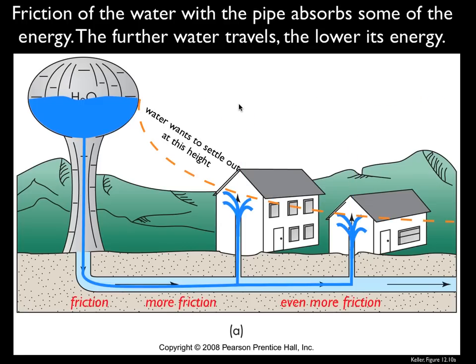In real life, it doesn't quite happen like that because our pipes actually have a fair amount of friction in them. That friction with the water pipe is going to absorb a little bit of the energy, so the further the water travels, the lower its energy will be. You can see that here — in this distant house, there's been a lot of friction as the water has traveled through all these pipes, and the water does not rise up to the level of the water tower. It rises up to a much lower level.